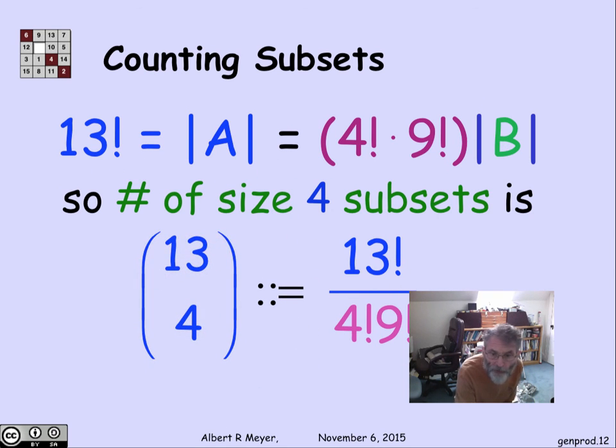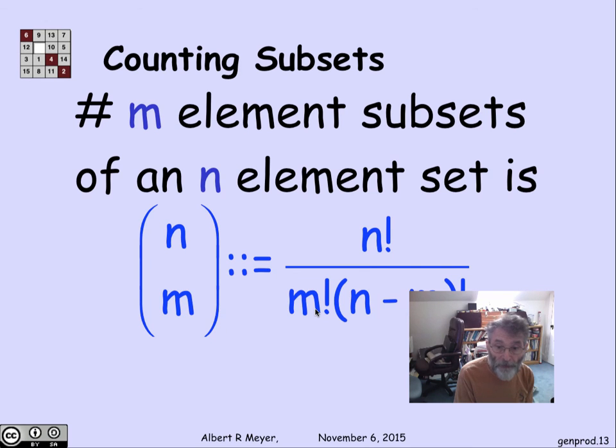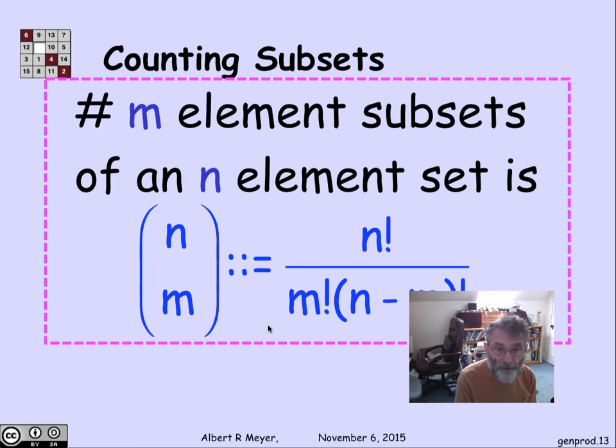Now this number, 13 factorial over 4 factorial times 9 factorial, comes up so often there's a special notation for it. This has the shorthand 13 choose 4, which is how we pronounce this. This is called a binomial coefficient. The general definition is that if I'm trying to choose m element subsets from a set of size n, then the number of those is n factorial over m factorial times n minus m factorial, by exactly the same reasoning. This is called n choose m. It's a binomial coefficient and comes up all the time. This is a fundamental definition you should remember.